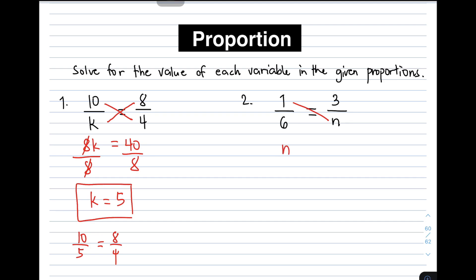Remember, if the coefficient of the variable is 1, you can make it invisible or you can remove 1 because it is considered there, though it is invisible. So 1 times n, it will give you 1n, and then we will make 1 to be invisible.